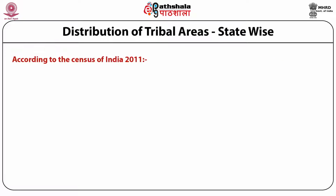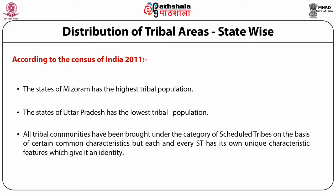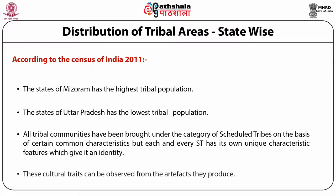The Census of India 2011 also released data on the tribal areas of the country. According to this, the state of Mizoram has the highest tribal population and the state of Uttar Pradesh has the lowest tribal population. The tribal population in India is spread across the diverse land of the country. Although all tribal communities have been brought under the category of scheduled tribes on the basis of certain common characteristics, each and every ST has its own unique characteristic features which give it an identity. Each tribe has a unique culture and tradition, and these cultural traits can be observed from the artifacts that they produce.